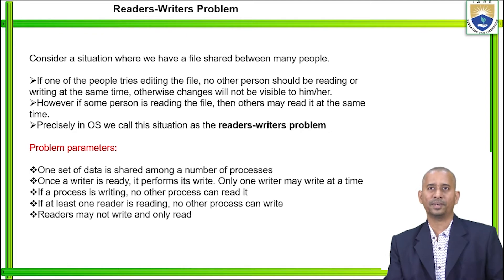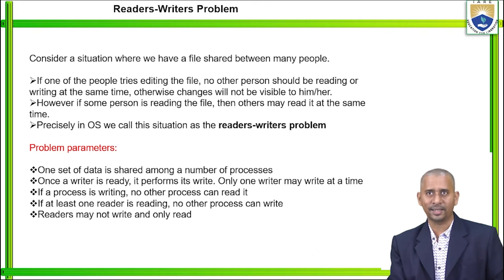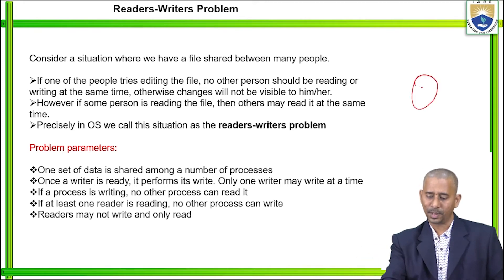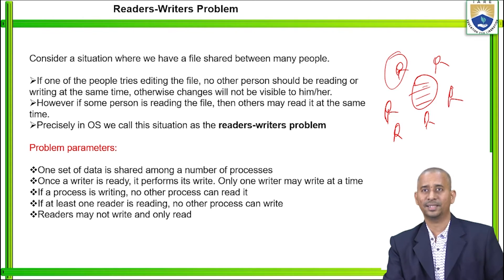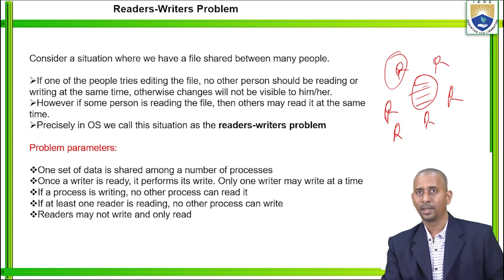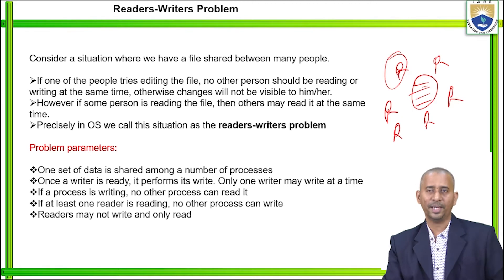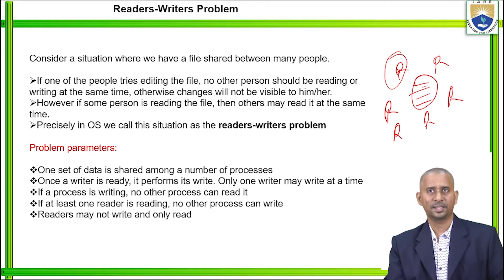In the readers-writers problem, if one of the people tries to edit the file, then no other person should be reading or writing at the same time. There exists some common data, and among all users, one particular user has full rights — the admin. If any one of them tries to edit that particular file, no other person should be reading or writing simultaneously, otherwise changes will not be visible to the editor.